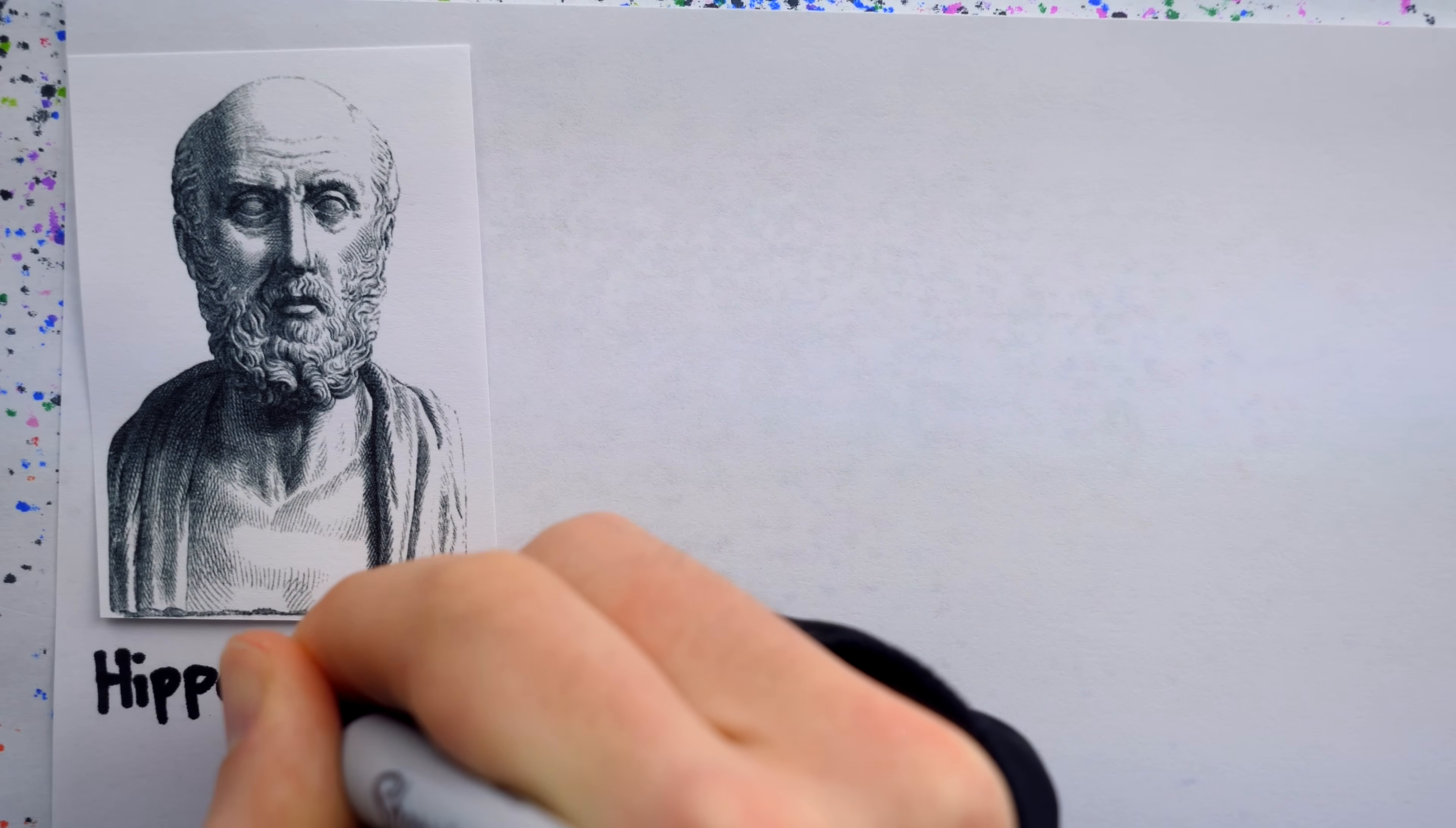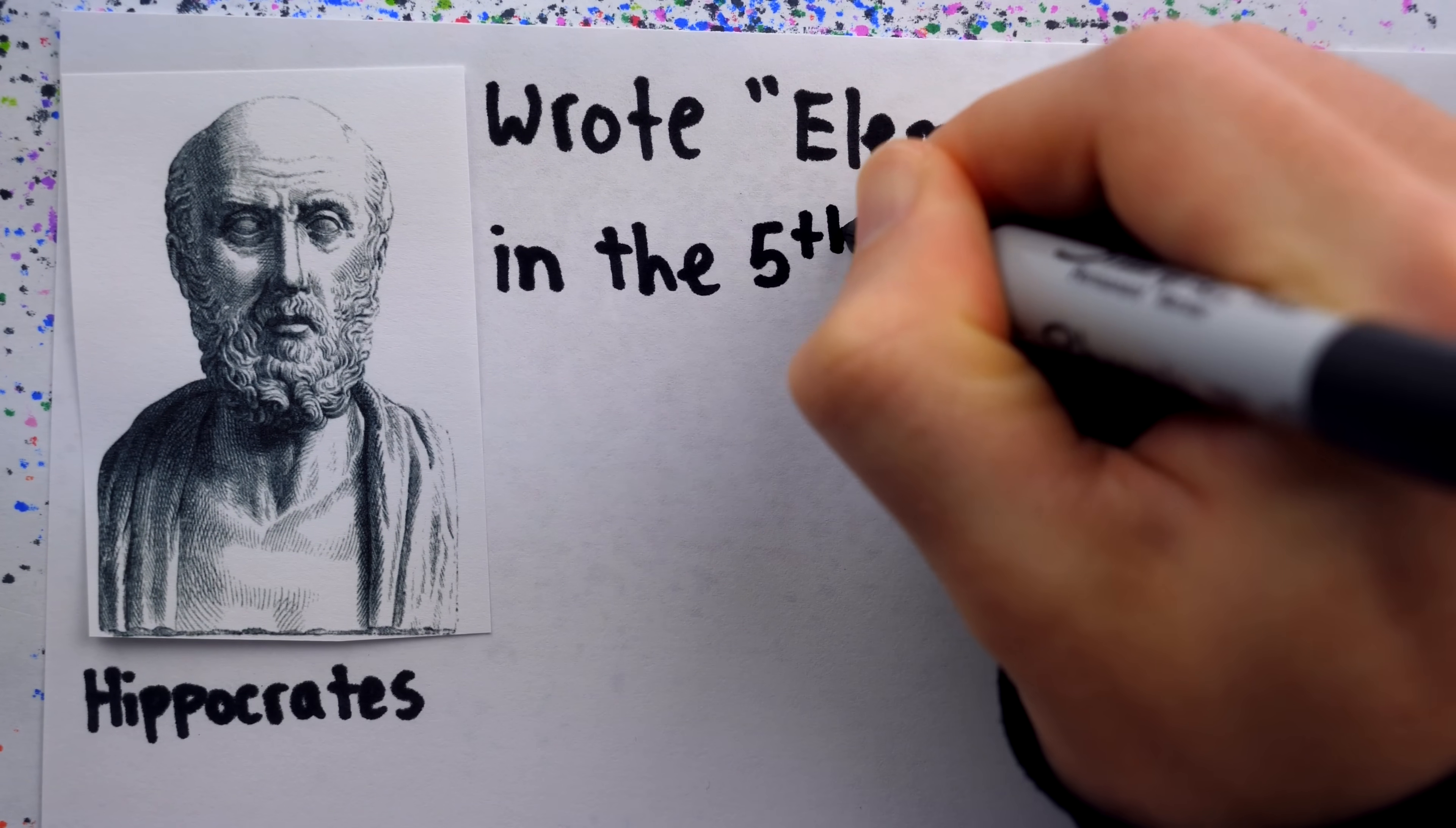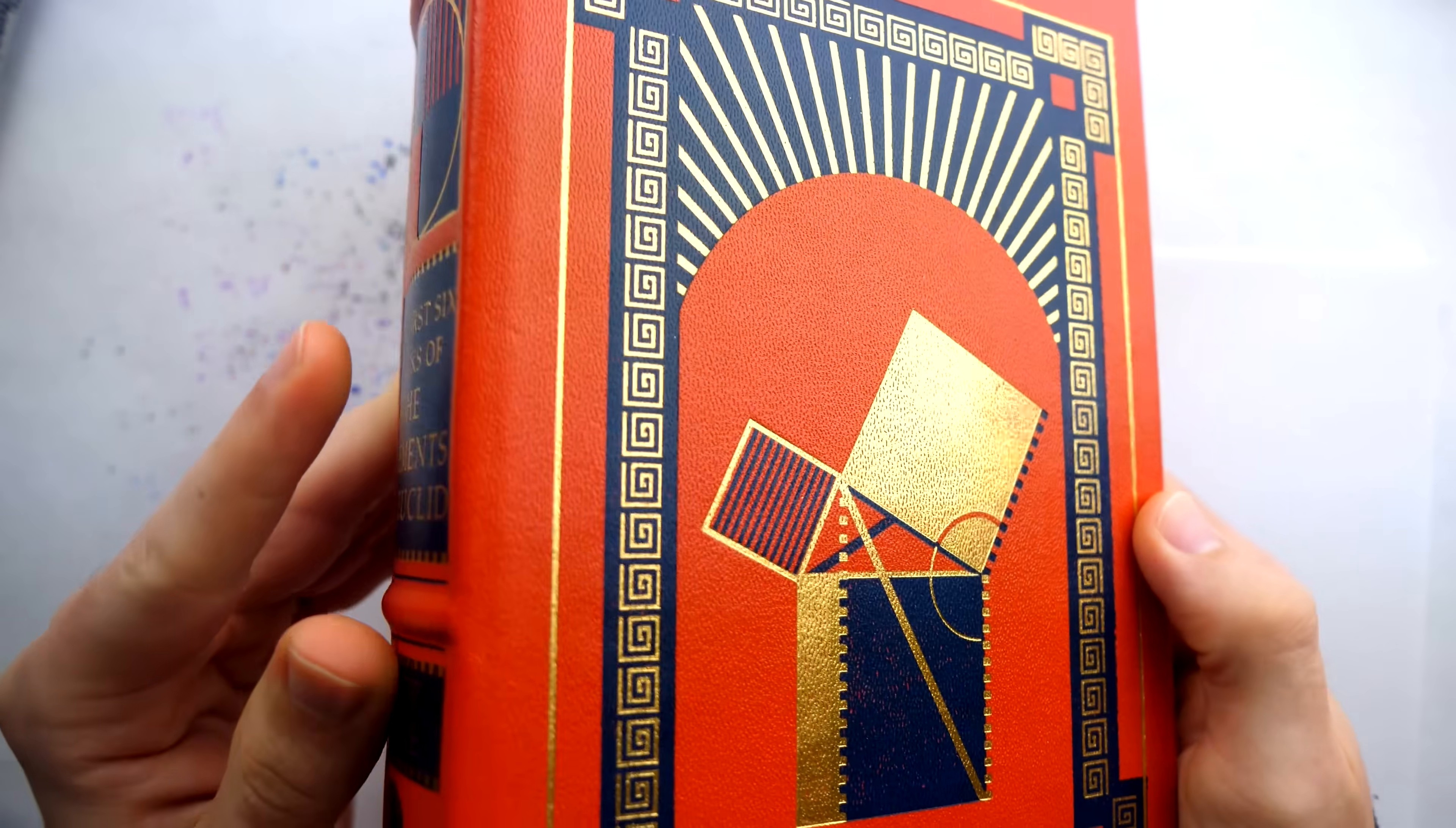Sometime in the fifth century BC, Hippocrates wrote the first ever systematically organized geometry textbook called the elements. Wait, you were thinking Euclid's elements? No, this didn't come around until the fourth century BC.